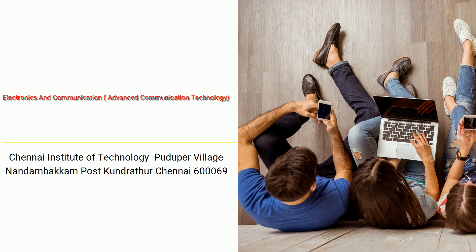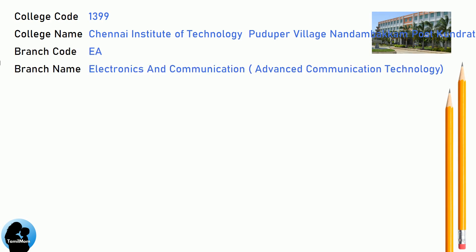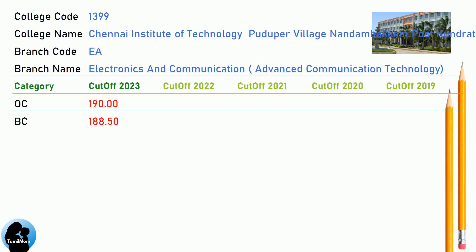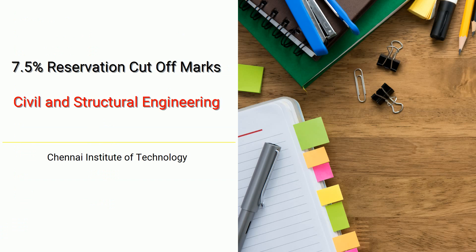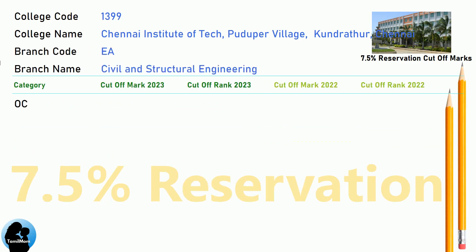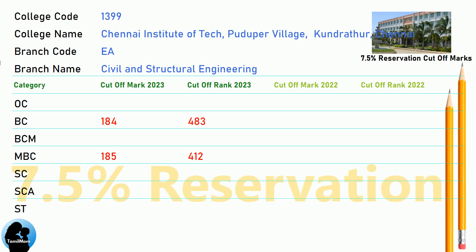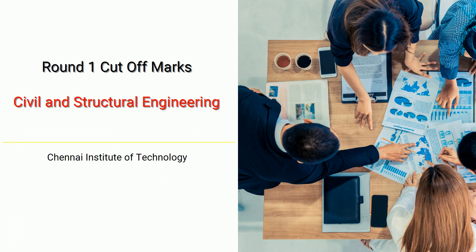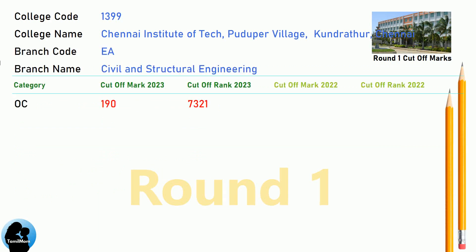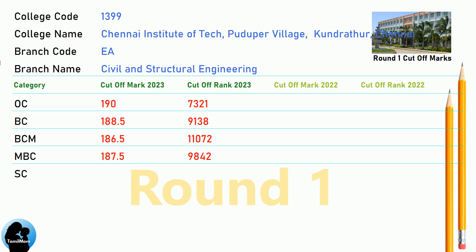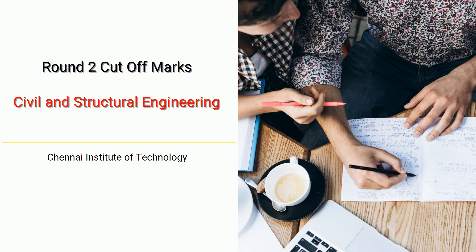DNA Cut-off for Chennai Institute of Technology in Electronics and Communication — Advanced Communication Technology. DNA 7.5 Reservation Cut-off for Chennai Institute of Technology in Civil and Structural Engineering. DNA Round 1 Cut-off for Chennai Institute of Technology in Civil and Structural Engineering. DNA Round 2 Cut-off for Chennai Institute of Technology in Civil and Structural Engineering.